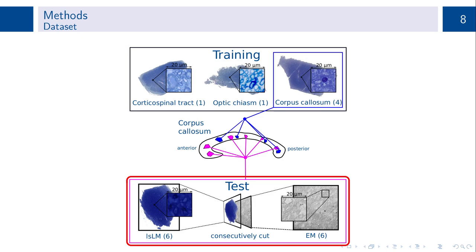To enable cross-microscopy comparison, we acquired a corresponding electron microscopy section for every LSLM section in the test dataset. These EM sections were consecutively cut to their LSLM counterparts.